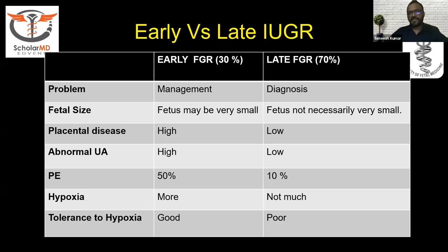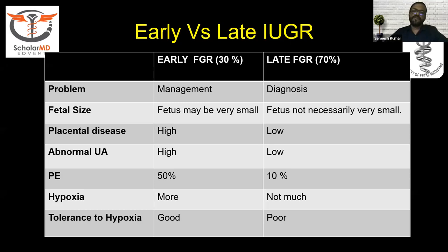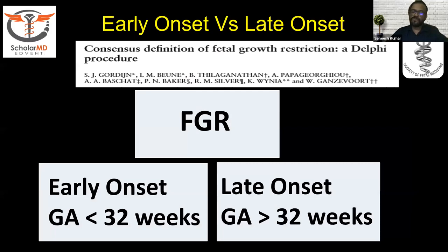The problem with late onset FGR in the third trimester is diagnosis — the fetus may not be essentially small, and the placental injury is very small for the umbilical artery Doppler to be abnormal. The hypoxia is not much, but this also means the fetus is less tolerant to hypoxia. So just like early onset IUGR, late onset IUGR is also prone to stillbirth and adverse neurodevelopmental outcomes.